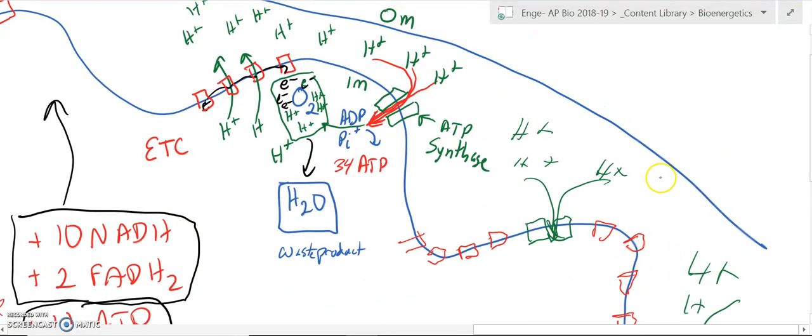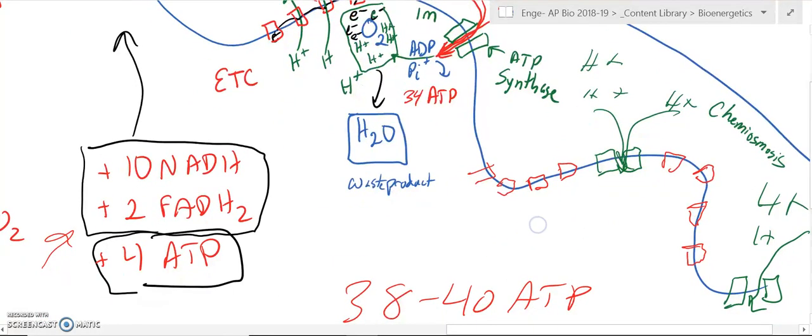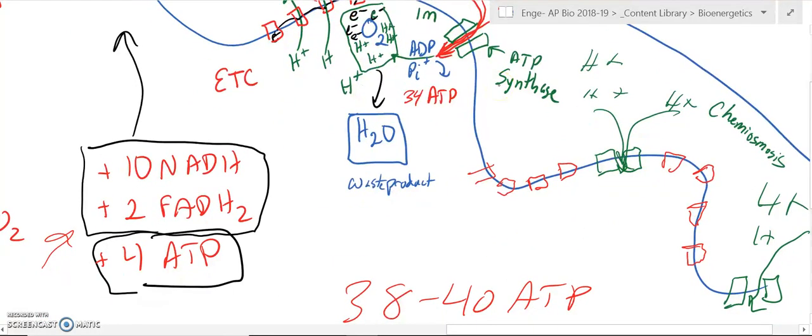And that process is called chemiosmosis. So, this process is chemiosmosis. And this entire process at the electron transport, including the electron transport and the chemiosmosis, is called oxidative phosphorylation.